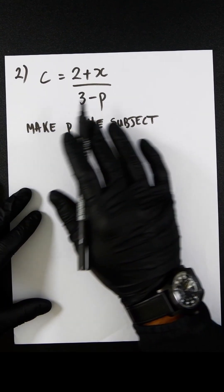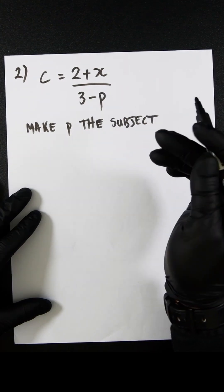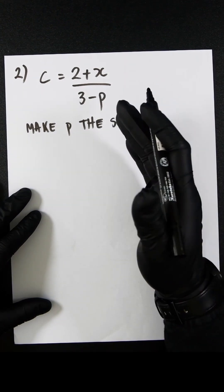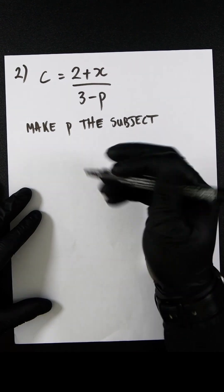Let's first multiply both sides by 3 minus p so that we can eliminate the denominator on the right hand side.